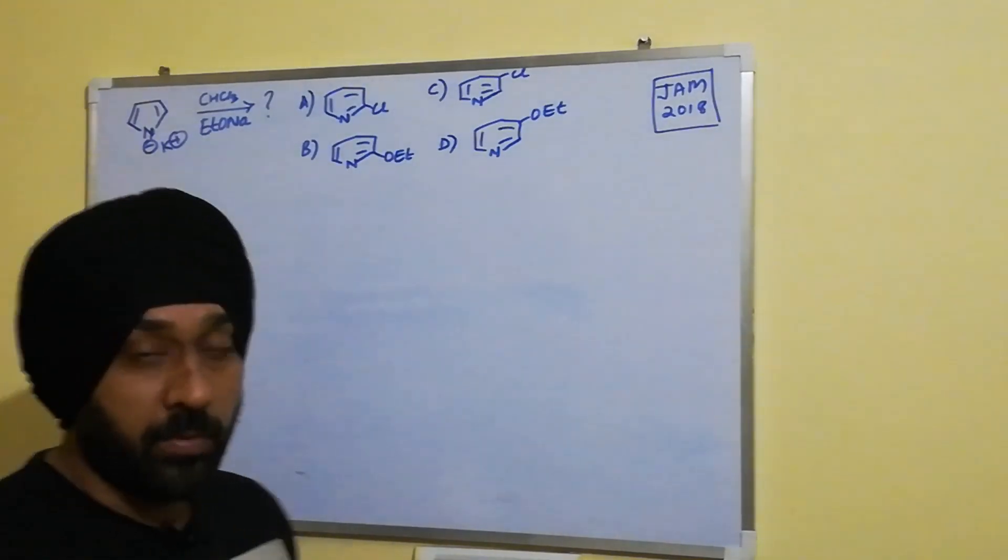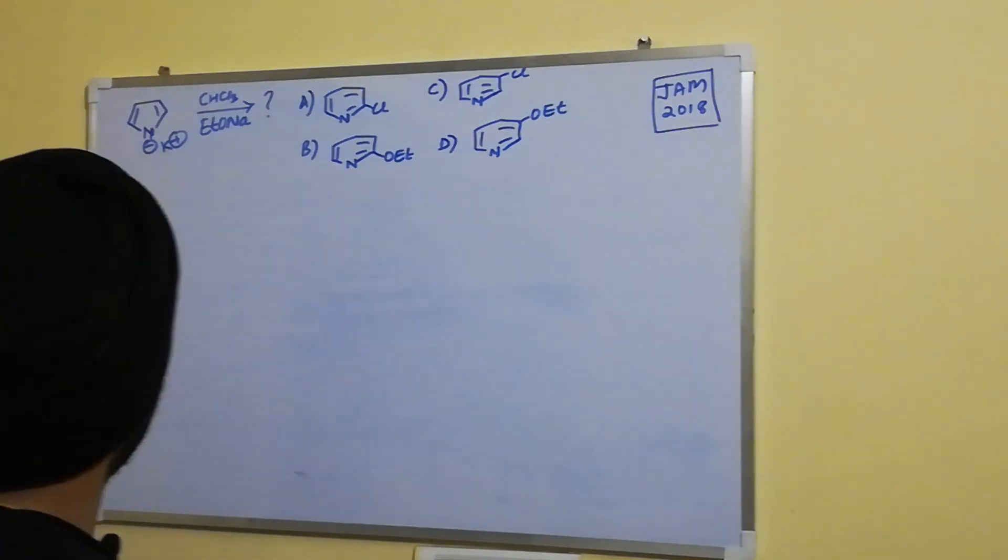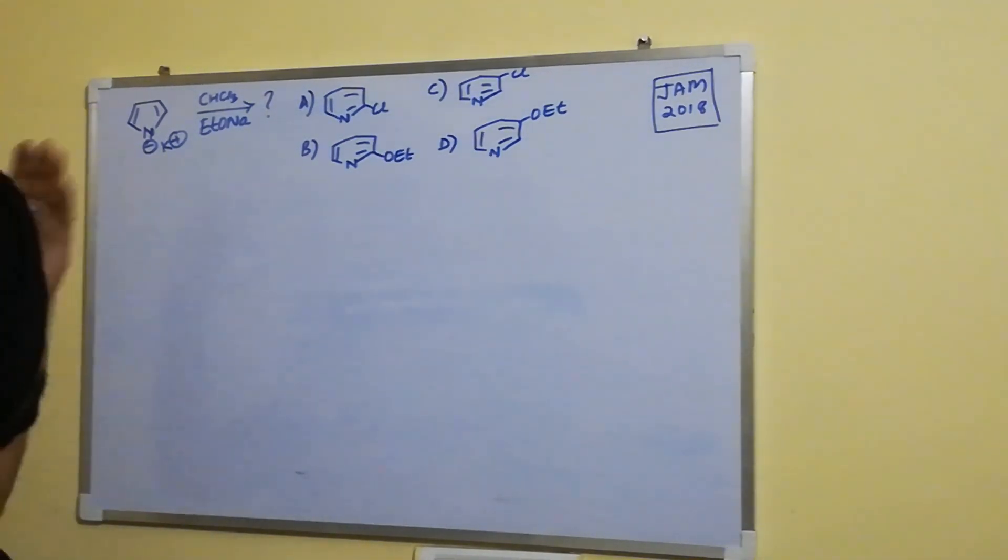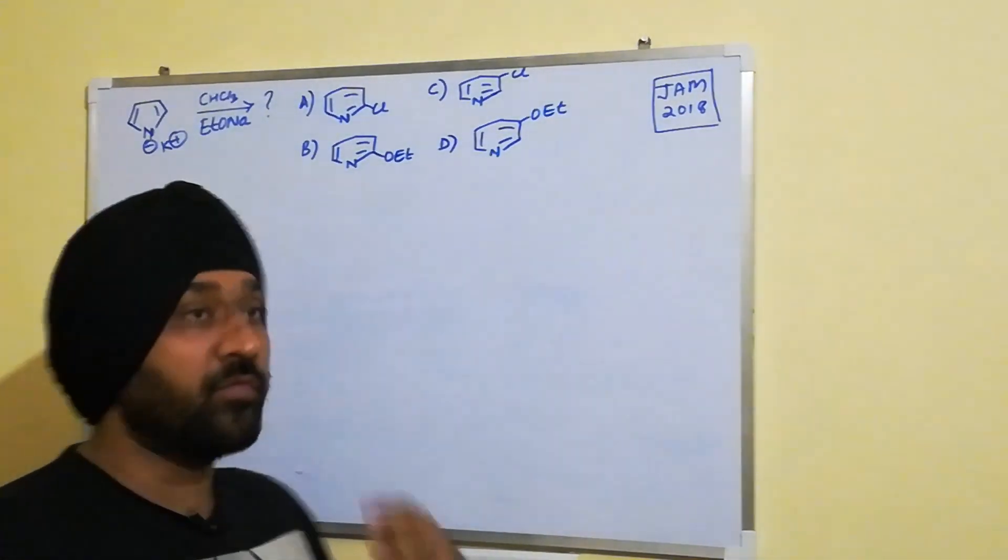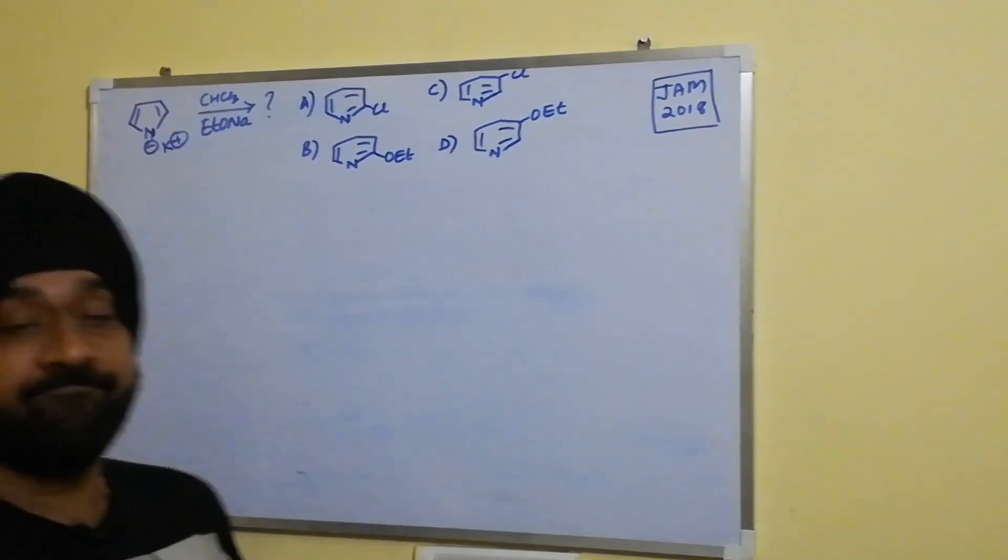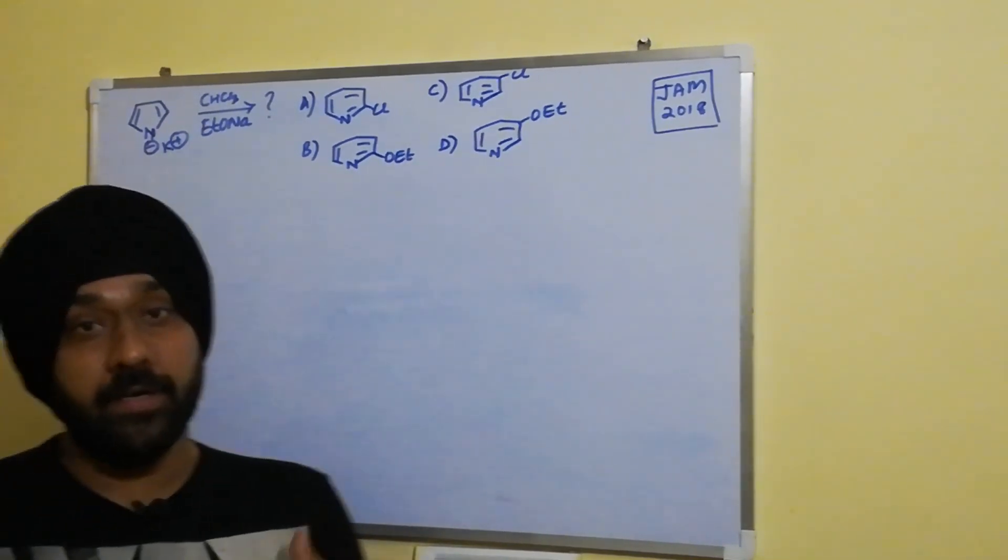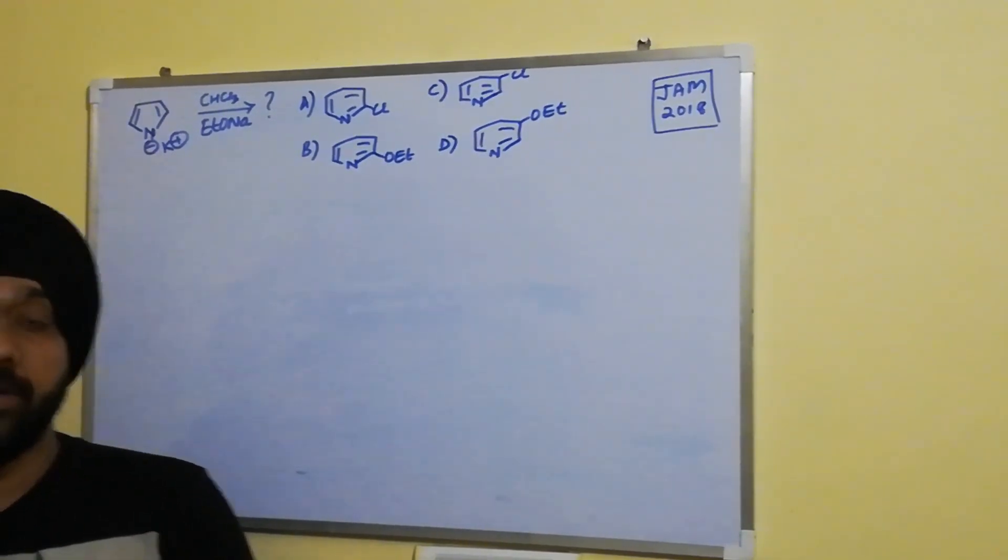Now let us take up a problem which appeared in JAM 2018 and it involves a reaction of potassium salt of pyrrole with chloroform in sodium ethoxide as a base. So if we remember a very well-known name reaction which is Riemann reaction,